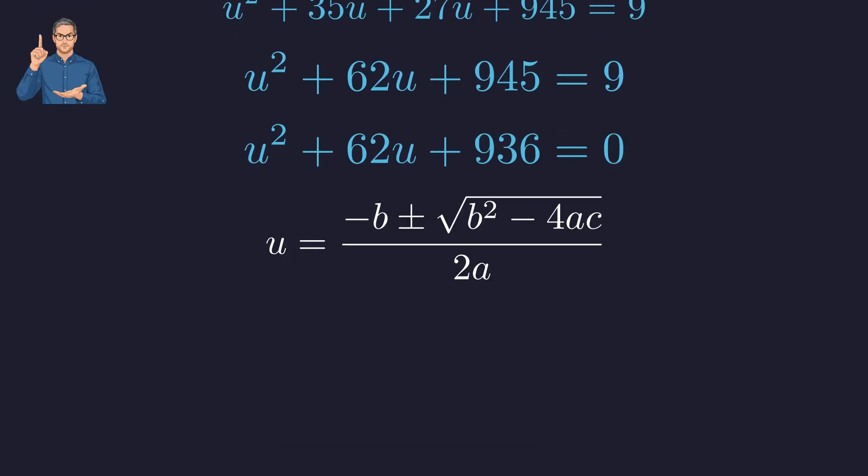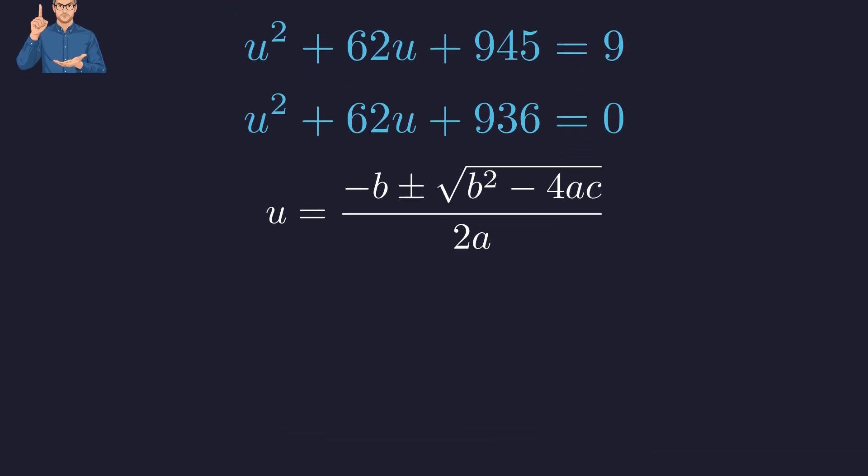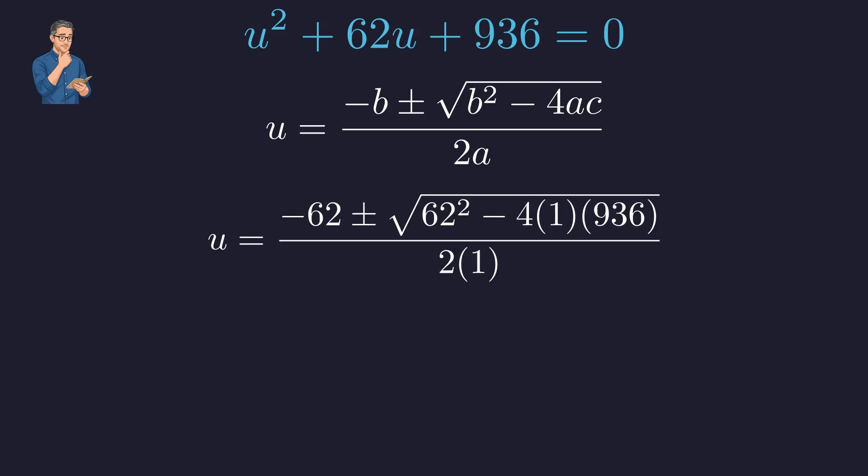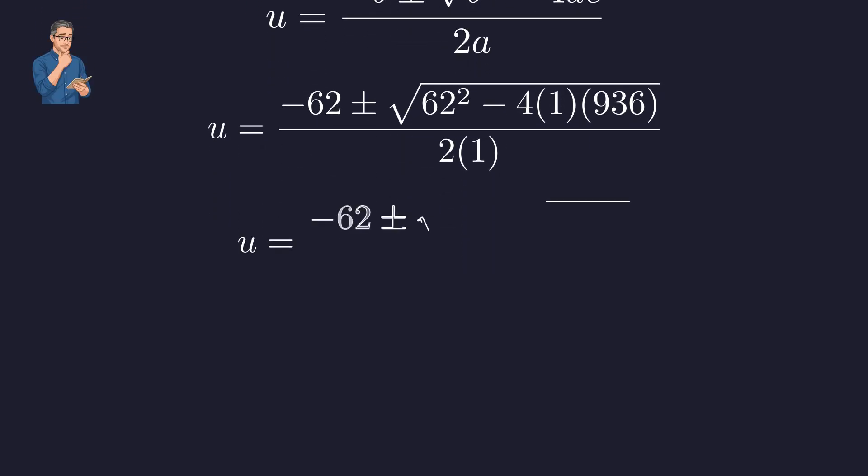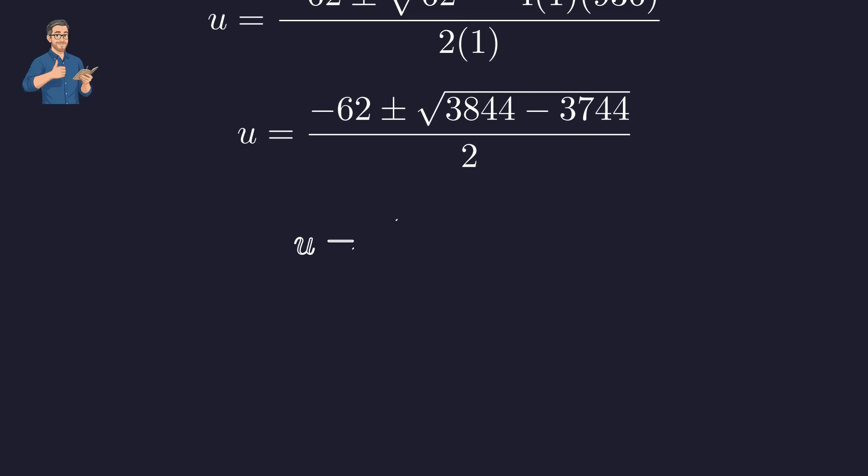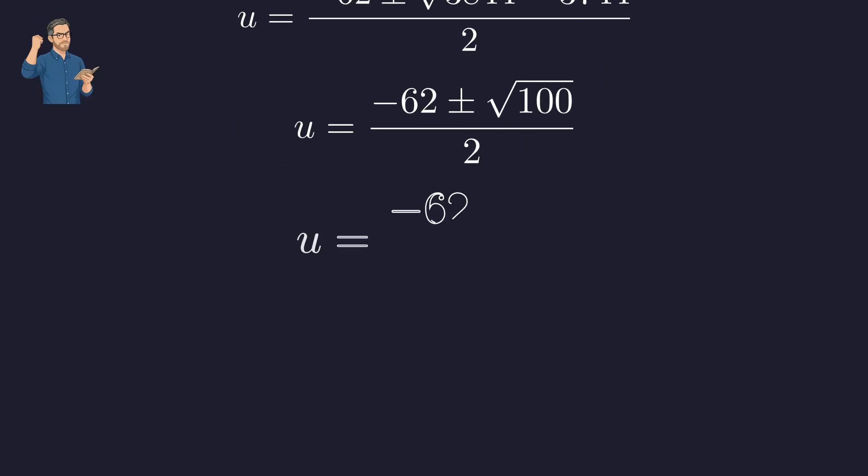We will use the quadratic formula to solve for u. We substitute our values. a is 1, b is 62, and c is 936. Next, we calculate the value inside the square root, the discriminant. The discriminant is a perfect square, 100.